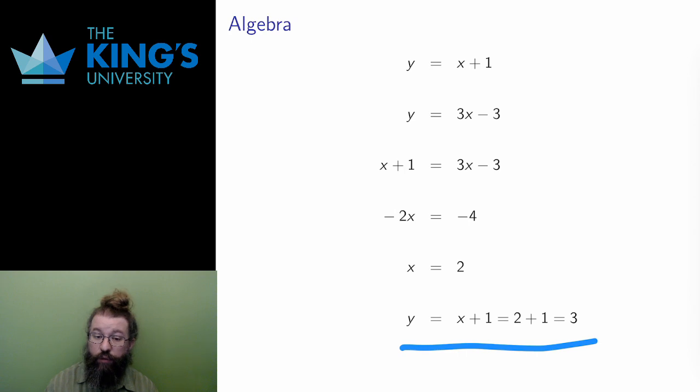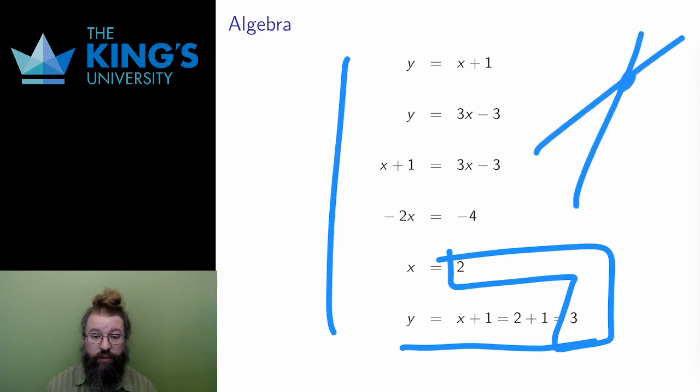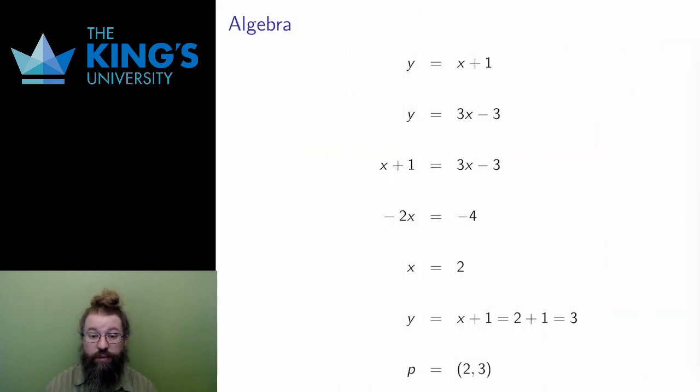Then I put this back in the first equation to calculate y, which turns out to be 3, and that's how I find the point (2,3), which is the intersection of the two lines. Again, the algebra, solving the system, isolate and replace, solves the geometry, finding the intersection.